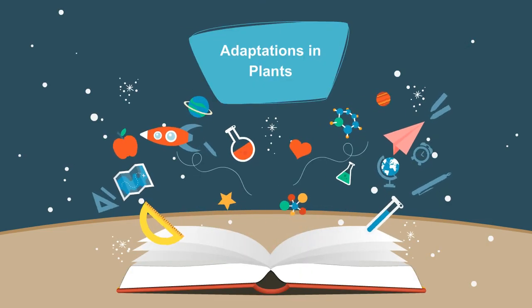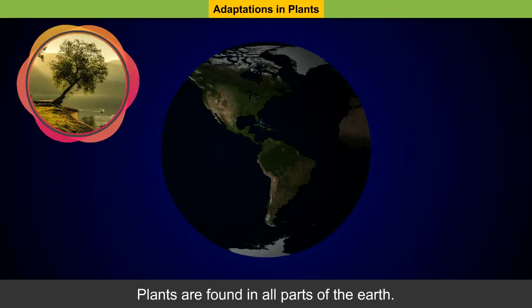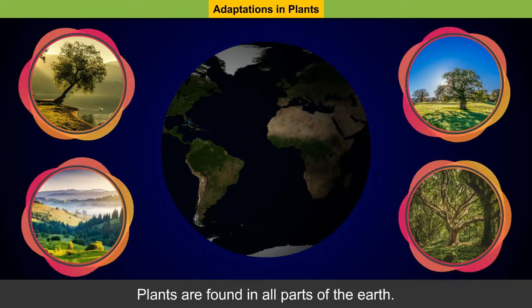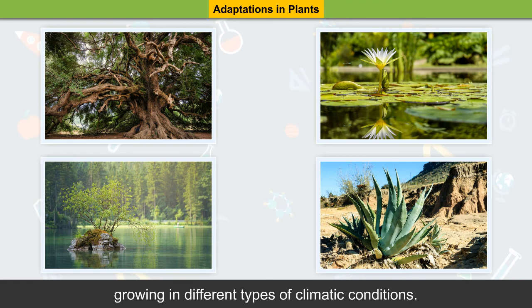Adaptations in Plants. Plants are found in all parts of the earth. There are millions of varieties of plants growing in different types of climatic conditions.